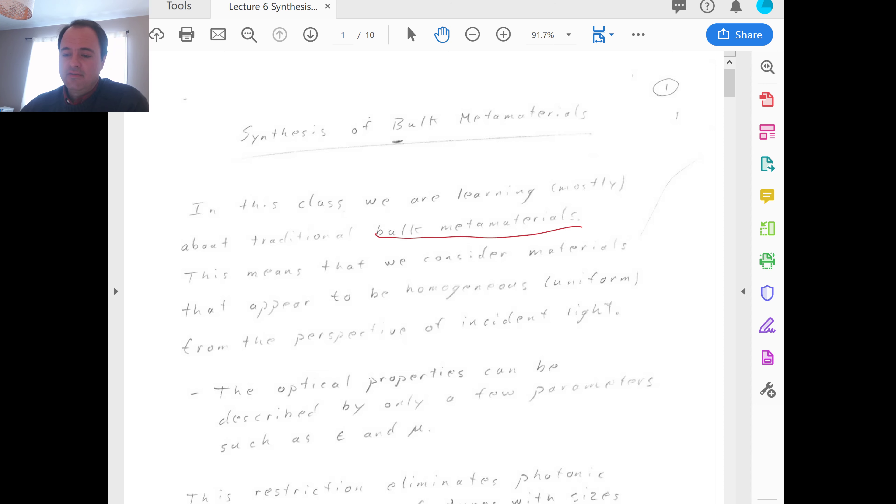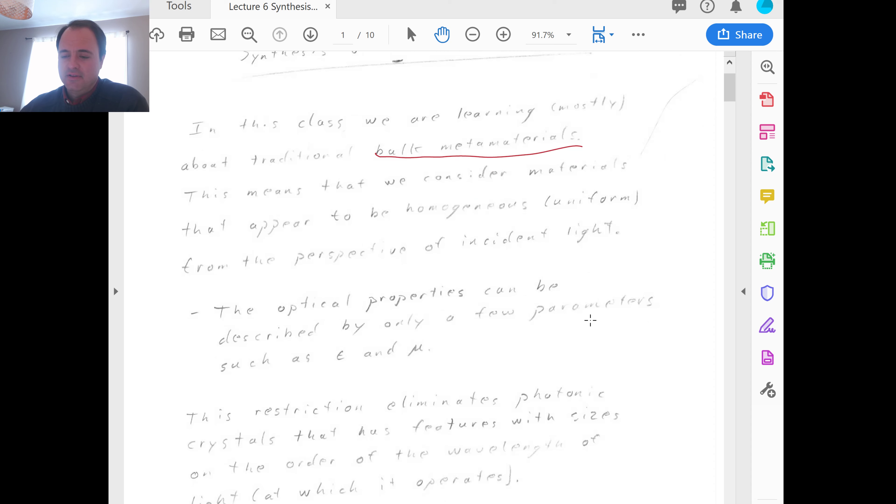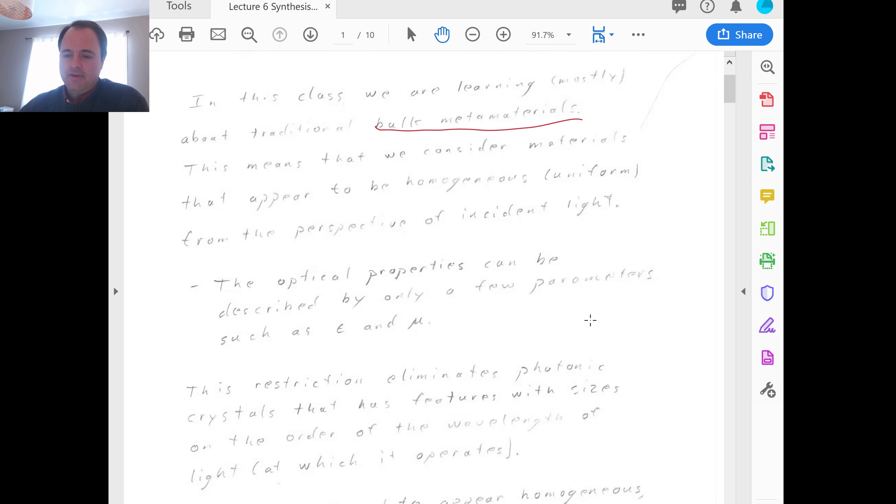In this class we are learning mostly about the traditional bulk metamaterials. This means that we consider materials that appear to be homogeneous, namely uniform, from the perspective of incident light. The optical properties can be described by only a few parameters such as epsilon and mu. So what this means is that this goes back to the traditional definition of metamaterials, where the researchers, the pioneers in this field said, this is going to be starkly very different from other classes of light controlling materials.